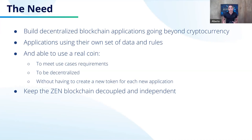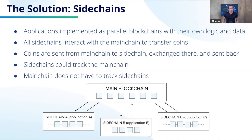Obviously we don't want to bootstrap and launch a new token for each new application, because it would require a lot of work — we'd have to list it on an exchange and so on, which would be very inefficient. Last but not least, we want to keep the Zen blockchain decoupled and independent. So let's see how sidechains solve this problem and what they are.